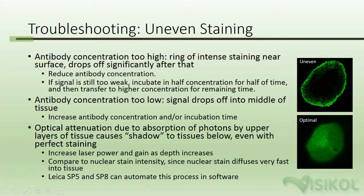Troubleshooting. What do you do when you get uneven staining? If your antibody concentration is too high, a ring of intense staining near the surface can be seen, followed by a significant drop off in intensity towards the inner parts of the tissue. The solution is to reduce the antibody concentration. If the signal is still too weak, incubate in half the concentration for half the time, then transfer to a higher concentration for the remaining time to avoid antibody getting held up in the outer layers. If your antibody concentration is too low, you will see the signal drop off gradually towards the middle of the tissue; increase antibody concentration and/or incubation time.